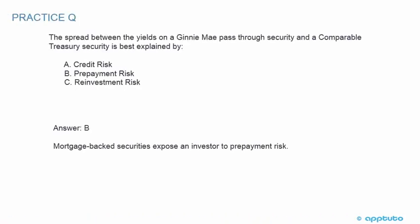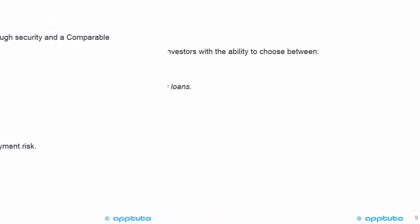The correct answer is B. Mortgage-backed securities expose an investor to prepayment risk. Therefore, the spread between the yields on a Ginnie Mae pass-through security and a comparable treasury security is best explained by prepayment risk.